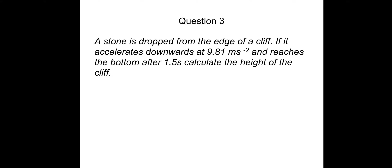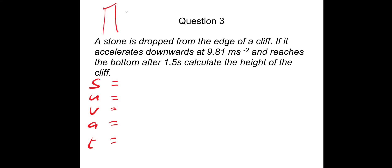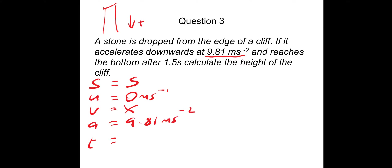A stone is dropped from the edge of a cliff. If it accelerates at 9.81 meters per second squared and reaches the bottom after 1.5 seconds, calculate the height of the cliff. Writing SUVAT: we take downward as positive. S is the displacement we're looking for. Since the stone is dropped, the initial speed U is actually zero. The acceleration A due to gravity is 9.81 meters per second squared. The time T is 1.5 seconds. The final velocity V we're not interested in.